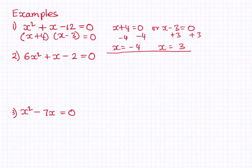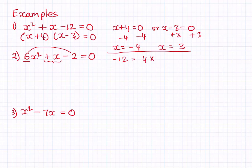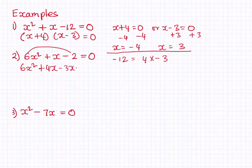The next example is slightly trickier because there is a coefficient of 6 at the front. We find the product by multiplying 6 and minus 2, giving minus 12. We need two numbers that multiply to minus 12 and add to positive 1 (the coefficient of x). Those numbers are 4 and minus 3. I strongly recommend watching the factorizing quadratics with coefficients video if you haven't. We rewrite the expression as 6x squared plus 4x minus 3x minus 2 equals 0.